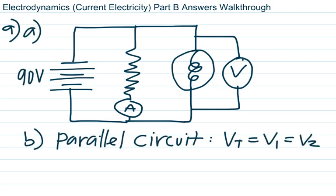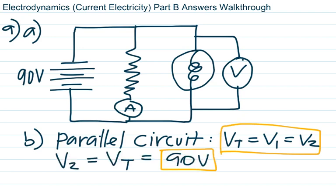Part b asks for the voltmeter reading. In a parallel circuit, all branches are independent of each other. If the total source voltage is 90 volts, there are 90 volts across the resistor and 90 volts across the bulb. So the voltmeter across the bulb reads 90 volts. In parallel, total voltage equals V1 equals V2 — the voltage across the bulb equals the total voltage.